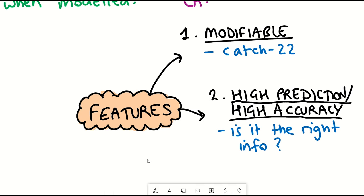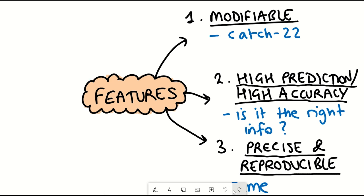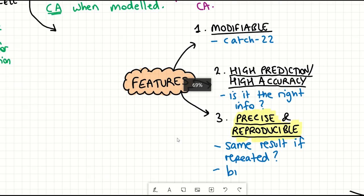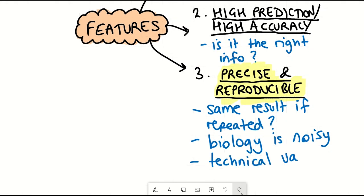The third feature is that you want it to be highly precise and reproducible. So if you did the sample twice would you get the same answer? Because biology can be noisy and the sensitivity of the marker being measured could maybe over interpret or misvalue. And so there could be technical variability as well as biological variability.